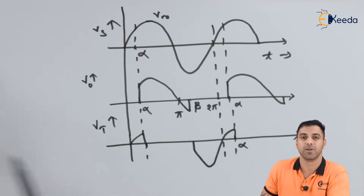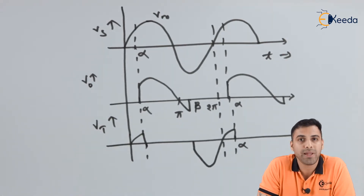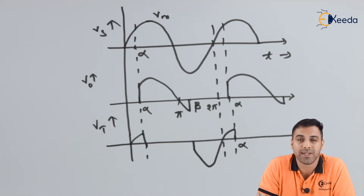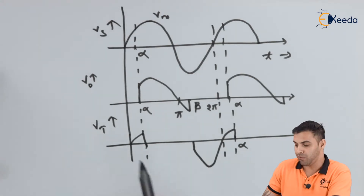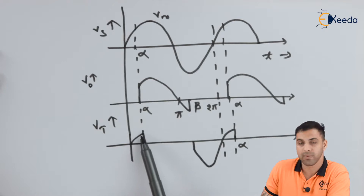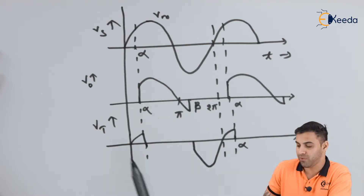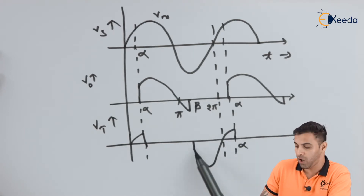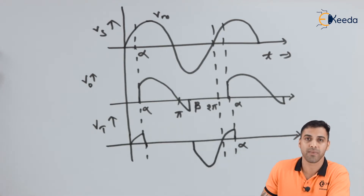Now let's talk about the thyristor voltage. The thyristor voltage is the voltage blocked by the thyristor during operation. The voltage appearing across the thyristor is the voltage which the thyristor has blocked. So from zero to alpha, as the thyristor blocks the voltage, we can see that portion of the waveform. Again, from beta to the next alpha, as the thyristor has blocked the voltage, we can see the waveform across the thyristor.